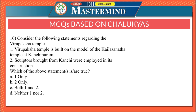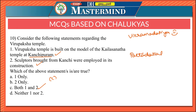The last question: the Virupaksha temple is built on the model of the Kailasanatha temple at Kanchipuram, and sculptures brought from Kanchi were employed in its construction. Both statements are correct, Option C. The Virupaksha temple was built by one of the queens of Vikramaditya 2 on the model of the Kailasanatha temple at Kanchipuram. Sculptures were brought from Kanchi to construct it, and this Virupaksha temple is also located at Pattadakal.